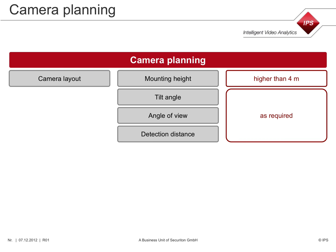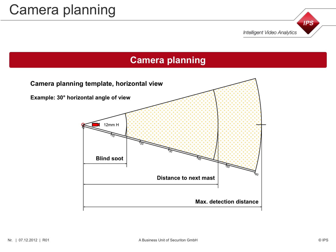The mounting height of a camera should be at least 4 meters. The camera should be tilted downwards so that the image does not contain elements of the sky. This avoids the sun shining directly into the lens. Specify the field of view using camera planning templates. This way ensures that you always maintain the maximum detection range and avoid detection gaps due to blind spots.